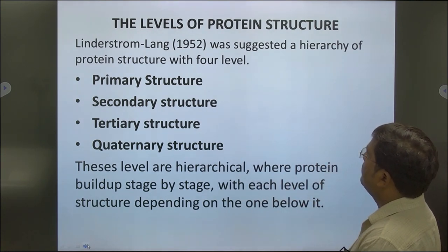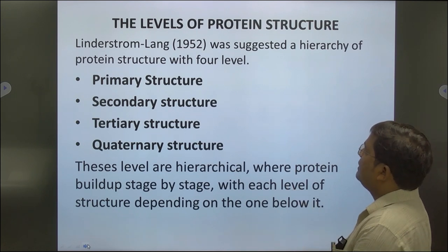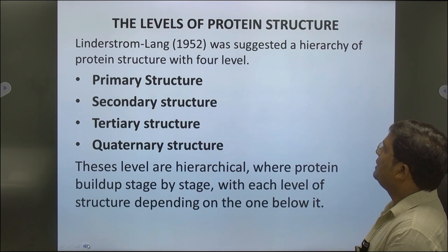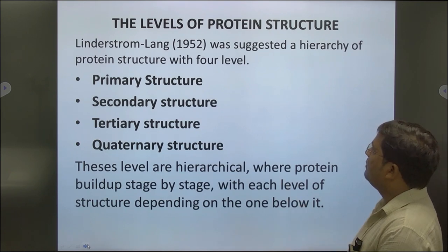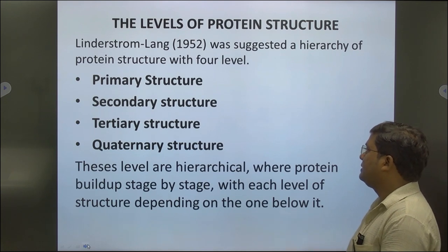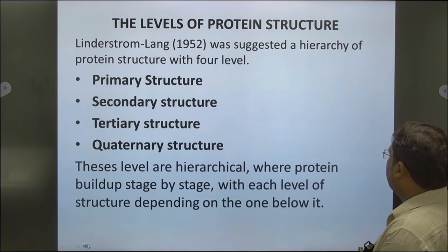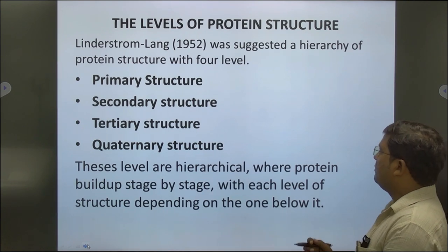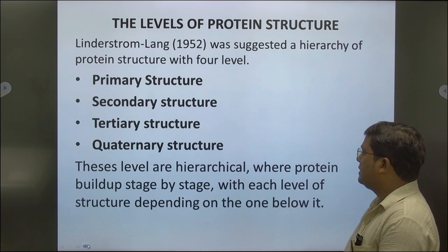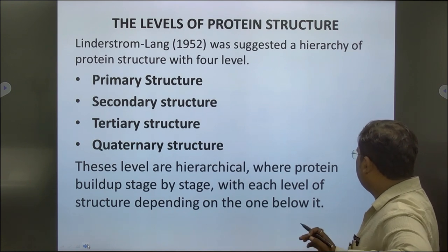Lindenstrom-Lang in 1952 suggested the hierarchy of protein structure at four levels: primary structure, secondary structure, tertiary structure, and quaternary structure. These levels are hierarchical, where protein is built up stage by stage, with each level of structure depending on the one below it.